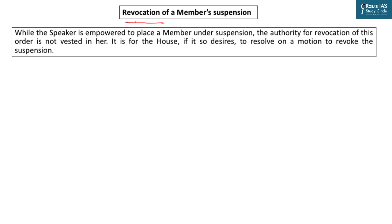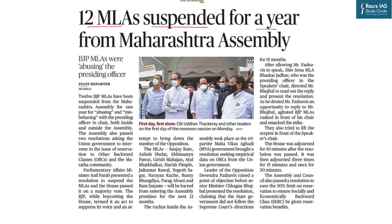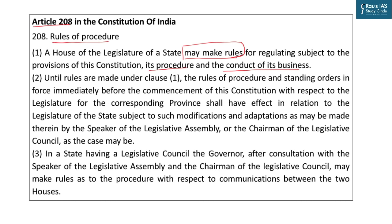The Speaker can suspend an MP by naming them, without requiring a motion. However, the Speaker cannot terminate the suspension — revocation must be done by the House through a motion. If you remember, in March last year seven Congress MPs were suspended and revocation was done by a resolution of the Lok Sabha. Now, in the newspaper headline, 12 MLAs were suspended for a year — not the remainder of the session — because the Lok Sabha rule book will not exactly match a state legislative assembly's rule book. Article 208 governs state assembly rules.